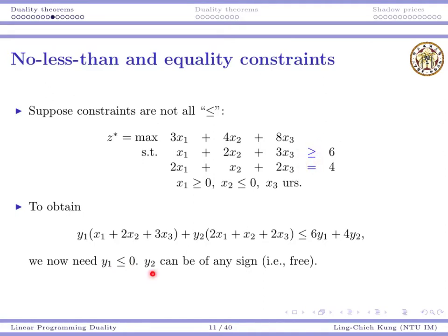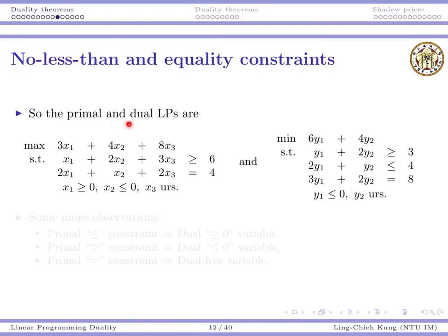For y2, it can be of any sign, because an equality constraint will never violate the less than or equal to requirement. So the primal-dual pairs are: for the greater than or equal to constraint, y1 must be less than or equal to zero; for the equality constraint, y2 must be unrestricted in sign.